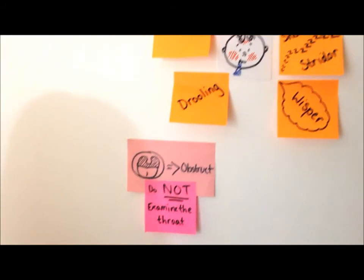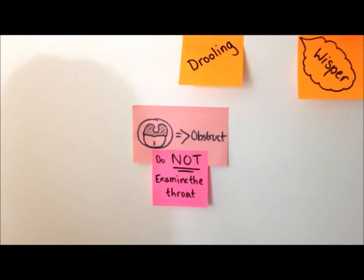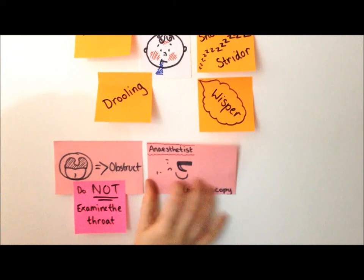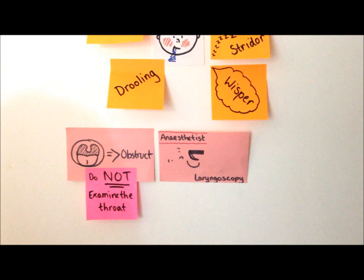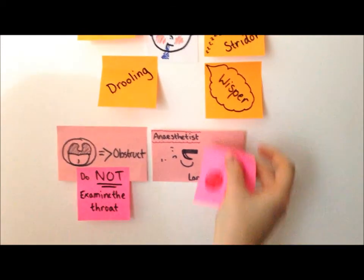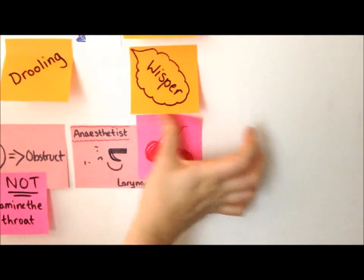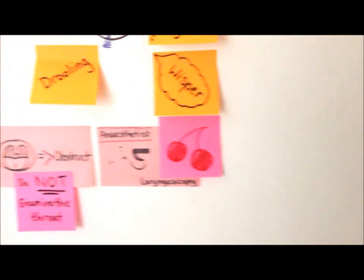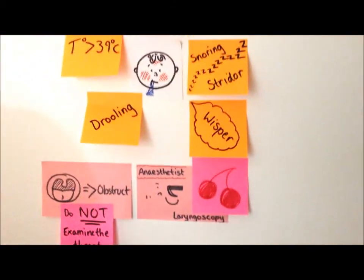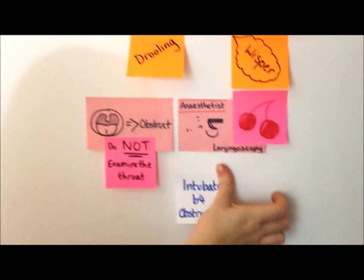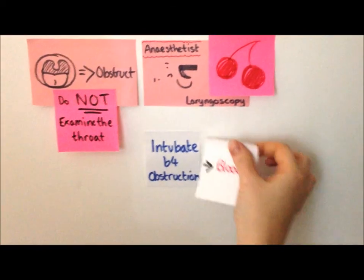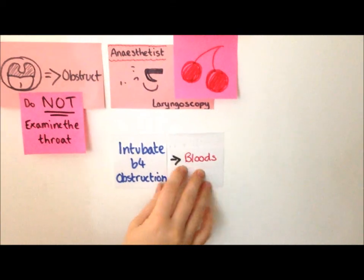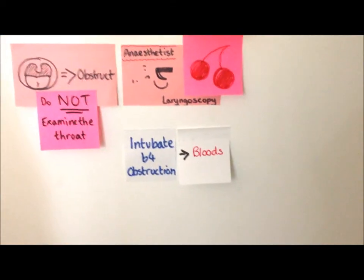Do not examine the throat because it can cause obstruction. The first thing to do is contact the most senior anaesthetist available for them to carry out a laryngoscopy. If they see that the epiglottis is swollen and cherry red, it suggests epiglottitis, and intubation would be needed before obstruction occurs. Only after this point can you then do bloods, because bloods distress children and create more obstruction.